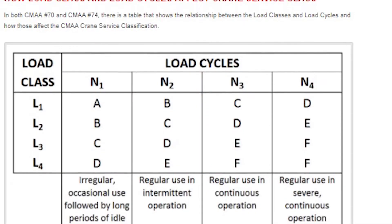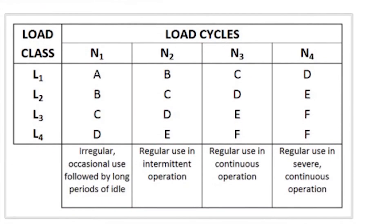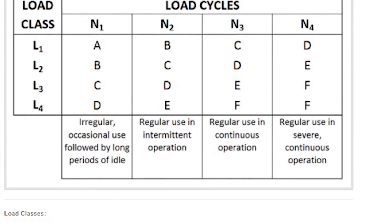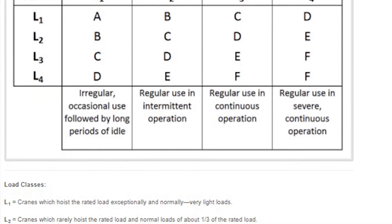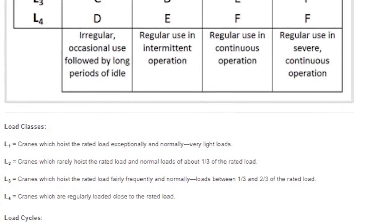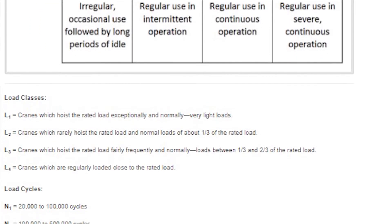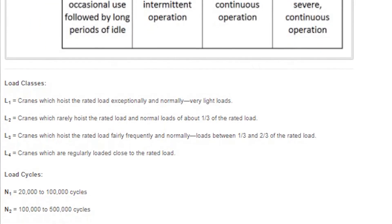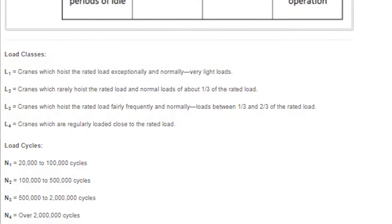Fortunately, there's a method to this overhead crane madness, and it comes down to two things: load class and load cycle. The load class is the relation of the overall capacity of the crane and the normal load that it sees. The load cycle is the number of times the crane will be used over its lifetime. Put these two together, look at the correlation, and that will determine what kind of duty cycle your crane is going to see.